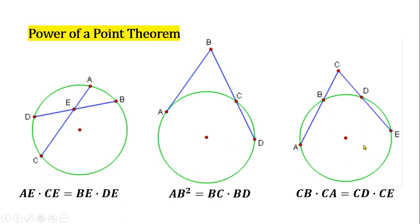And for the last case, there are two secants involved. Suppose they are CA intersecting the circle at points B and A, and CE intersecting the circle at points D and E. And similarly, from this case, the equation CB times CA equals CD times CE can be derived.